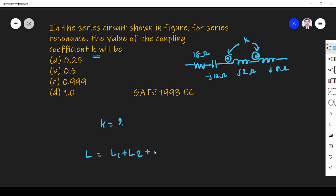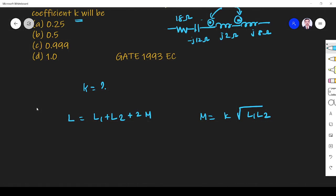We know M and L are related by M = k√(L1·L2). So from this we can find M = k√(j2 × j8) = jk4. This is what M is in terms of k.